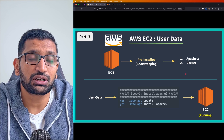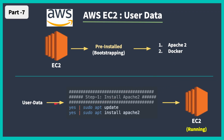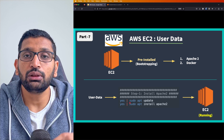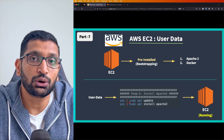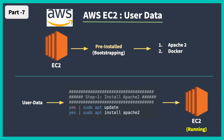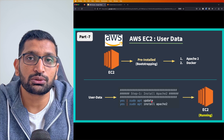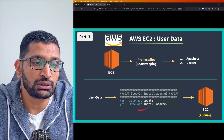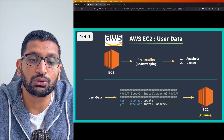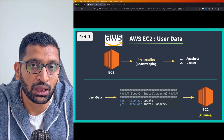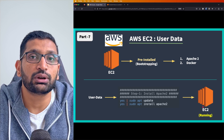Before jumping into the demo, let's look at the user data script. This script installs Apache 2. The command runs with sudo, and I've prefixed it with 'yes' piped in to automatically confirm the install prompt, followed by sudo apt update. The first command updates the package manager, and the second installs Apache 2 onto our Linux EC2 machine. Let's jump to the AWS console and create our EC2 instance.